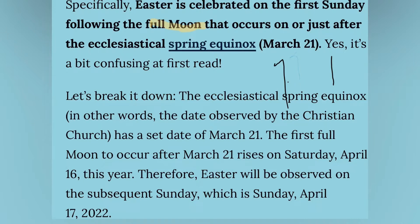The ecclesiastical spring equinox — in other words, the date observed by the Christian church — has a set date of March 21st. The first full moon to occur after March 21st rises on Saturday, April 16th this year. Therefore, Easter will be celebrated on the 17th, which is this coming Sunday.